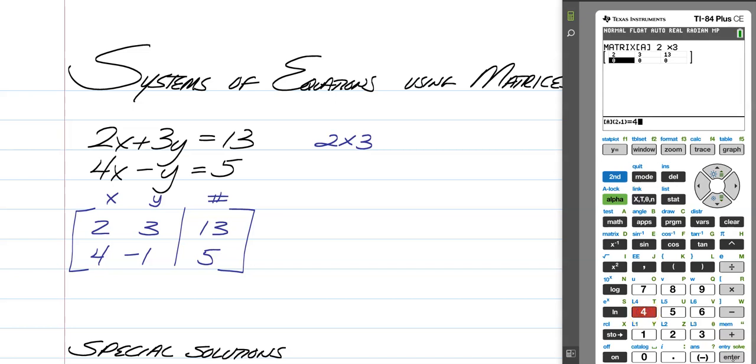And then we have a 4, negative 1, and 5. Okay, and then once you have that all entered, you want to click 2nd, and quit the mode button.